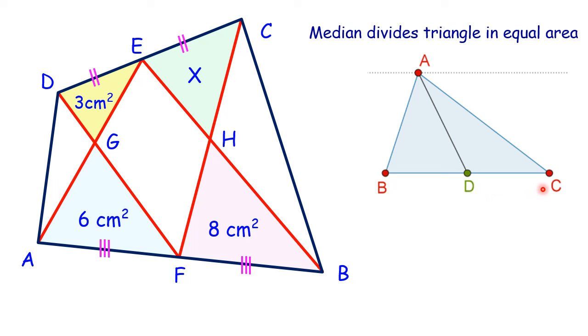So we'll apply the same thing on triangle ABE. Now in this triangle, F is the midpoint, so basically EF will be the median. Let's name this triangle area as A and this triangle area as B. So EF will divide them into equal areas. So we can say that 6 plus A will be equal to 8 plus B.